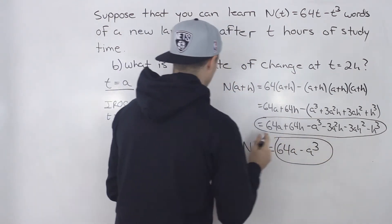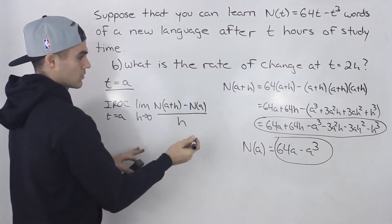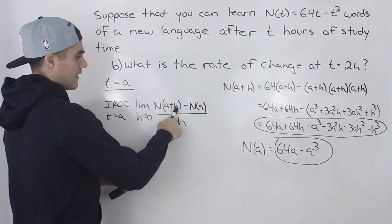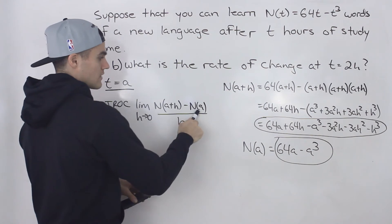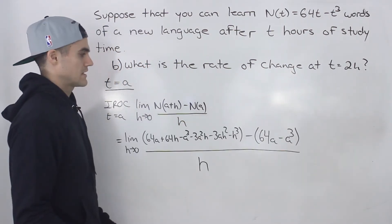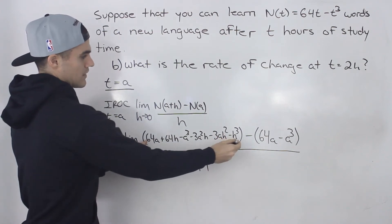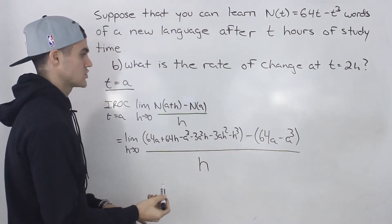So going back to our general difference quotient, this limit here, we're going to plug in this expression, this whole expression for N of a plus h. And then for N of a, we're going to be plugging in that expression. So making that substitution, we got N of a plus h minus N of a, it's going to be all over h.